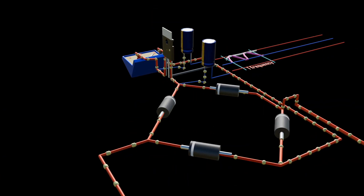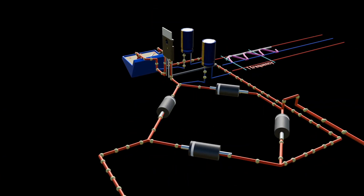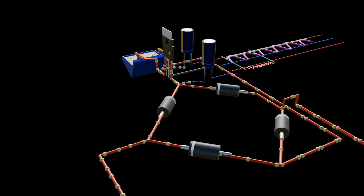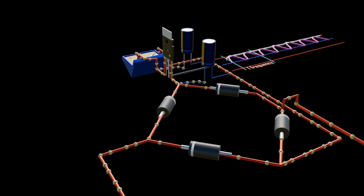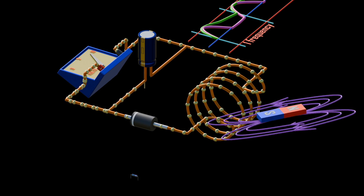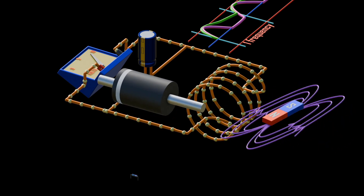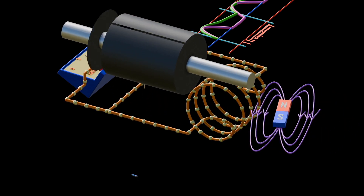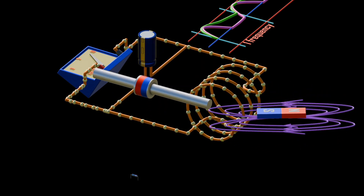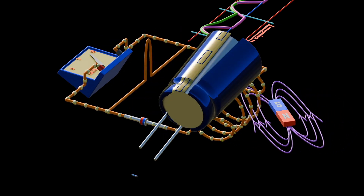This is because a voltage regulator generates a fixed voltage of a preset magnitude that remains constant regardless of changes to its input voltage or load conditions. Check how diodes and capacitors work — link in the description.